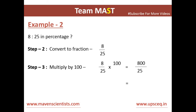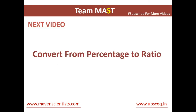Moving on to Example 2: we have 8:25 as a percentage. First, we convert it into a fraction — 8 divided by 25. Next, we multiply it by 100, which gives us 800 divided by 25, which equals 32%. This is a pretty easy method to convert a ratio into a percentage.